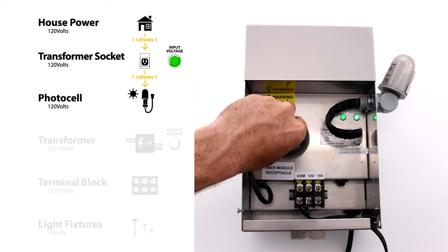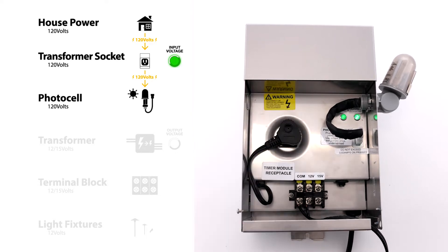When you plug the internal plug into the socket, it sends the power to the photocell. The photocell senses if it's dark enough outside to then send the power to the internal transformer, and it converts it to both 12 and 15 volts.